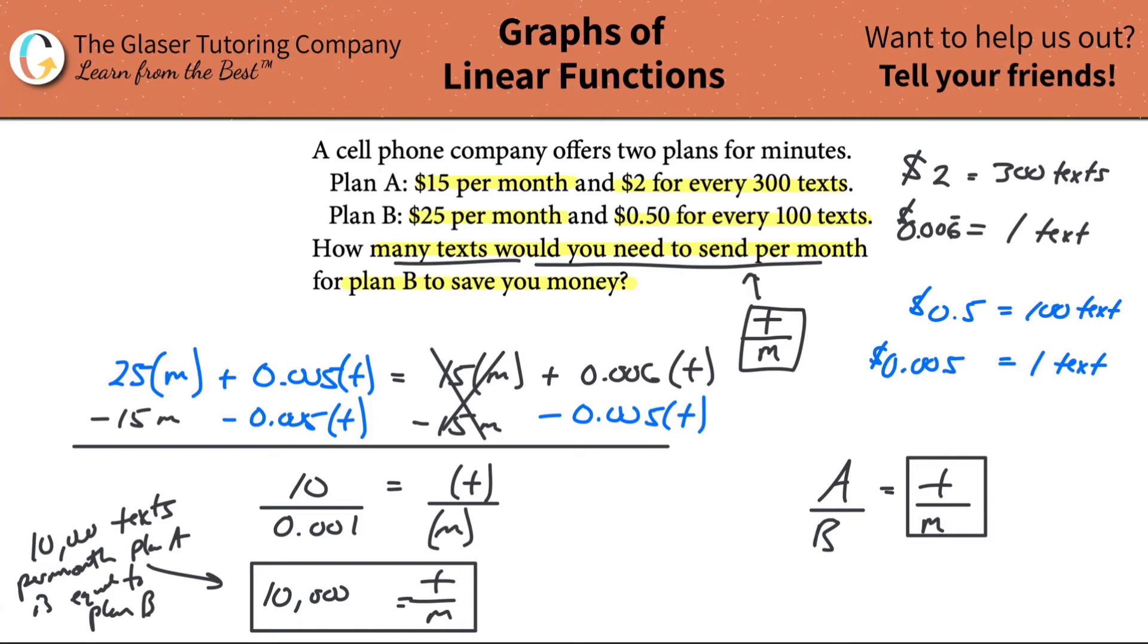Then it says, how many texts would you need to send per month in order for Plan B to save you money? Now what you can do is take a step back and notice that the cost per text of Plan B here in blue was cheaper than the cost per text of Plan A.